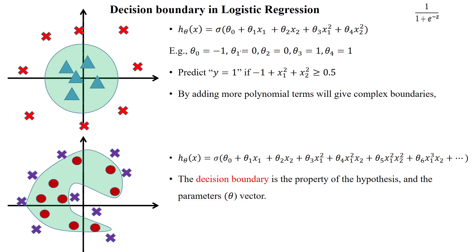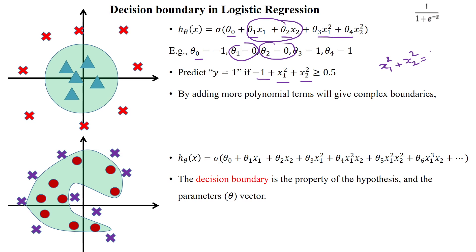When substituting values for theta_0, theta_1, etc., you get minus 1 plus x1_squared plus x2_squared. Here theta_2 and theta_1 are 0, so those terms become zero, leaving x1_squared plus x2_squared. Expanding this gives x1_squared plus x2_squared equal to 1 — this is the equation of a circle. So we get a decision boundary in the form of a circle. Looking from the top view of the plot, the dataset inside is classified as class A and outside as class B.